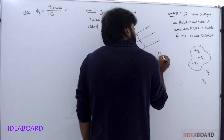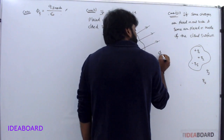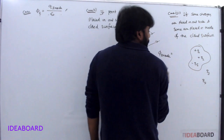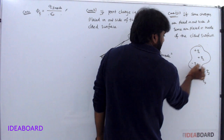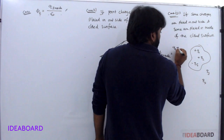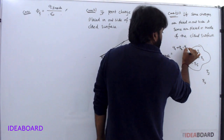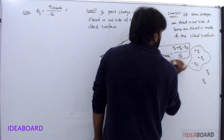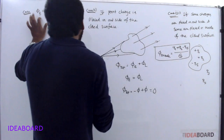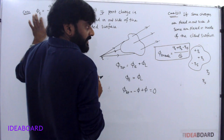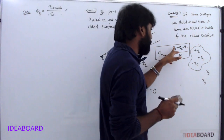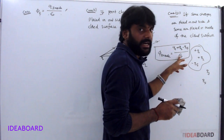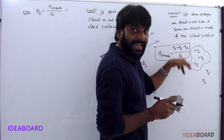First of all, flux due to inside charges: you consider the total inside charge, which is q1 plus q2 minus q5, divided by epsilon naught. According to the first case, flux inside is equal to q1 plus q2 minus q5, by epsilon naught — that is, the total charge inside.